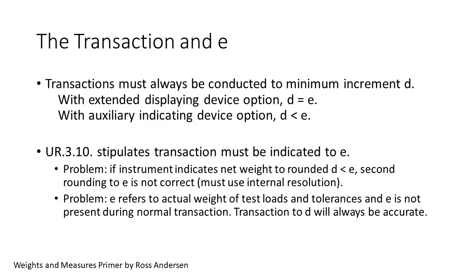There are problems with UR310. First, if the instrument indicates 2.1 pounds but you want the transaction in one pound, you have to round a second time and this adds bias in the rounding. Second, E is actual weight of the reference standards and they are not present during commercial transactions, only during testing. If you want to conduct commerce to one-pound divisions on a dynamic monorail, then create systems with extended displaying devices to facilitate testing. If you use a system with a scale division D smaller than E—with the auxiliary indicating device—the transactions are conducted to the smallest increment D. I believe UR310 is the result of the misunderstanding that we verified E and that E was part of the weight indication. E is actual weight embodied in the test weights. I've shown that we verify the Ds in our test.